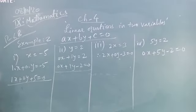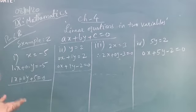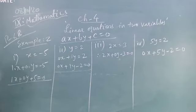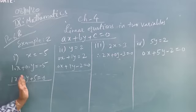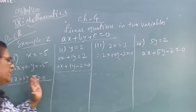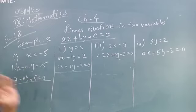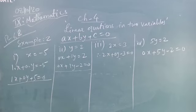If the X coefficient is not given, then you consider 0. If the Y coefficient is not given, you consider 0. If the constant is not given, you consider it 0. Always write in AX plus BY plus C is equal to 0 standard form. So tomorrow we shall discuss example number 3 and 4.